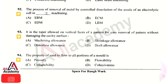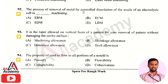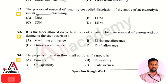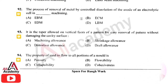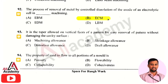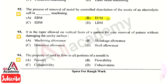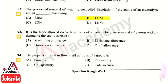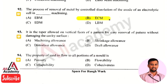The next question: the process of removal of metal by controlled dissolution of the anode of an electrolytic cell in a dash machining — the right answer is option 2, that is ECM. ECM refers to Electrochemical Machining, which is a non-traditional machining method in which the electrochemical process is used to remove material from the workpiece.